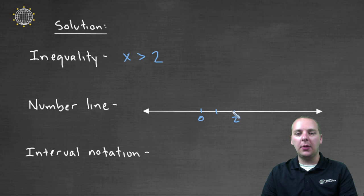So what I'll do is I'll put an open circle at two, and then I'll shade everything to the right of two. Now why did I do an open circle as opposed to a closed dot?